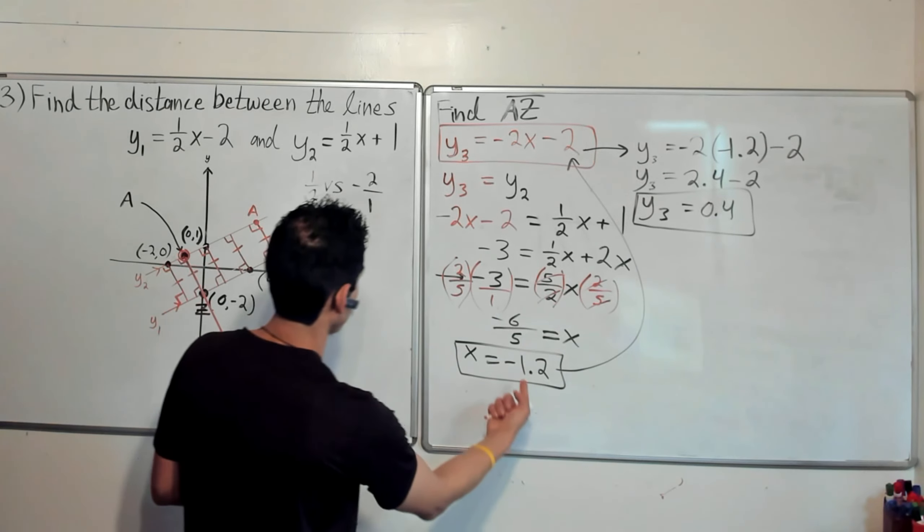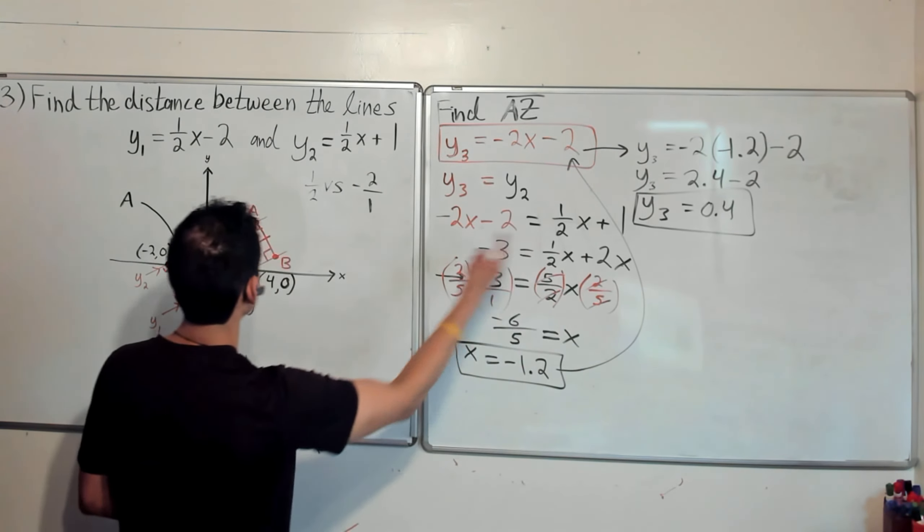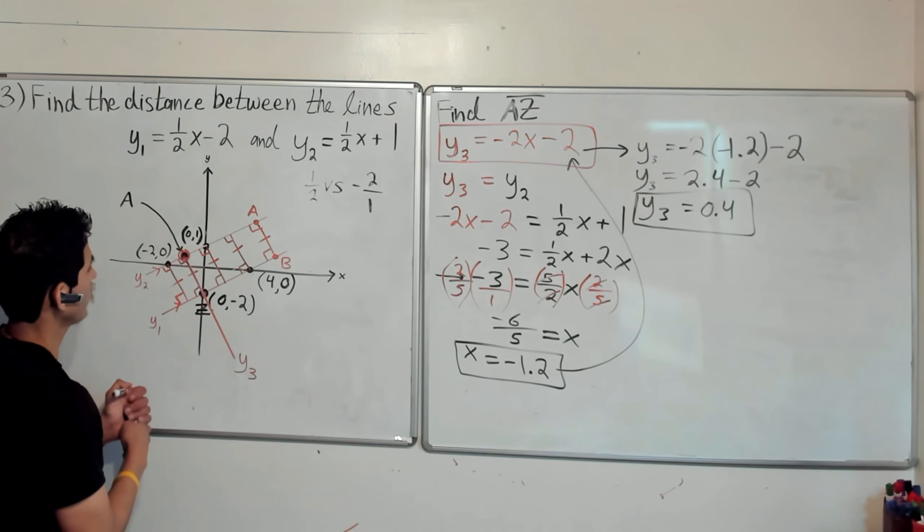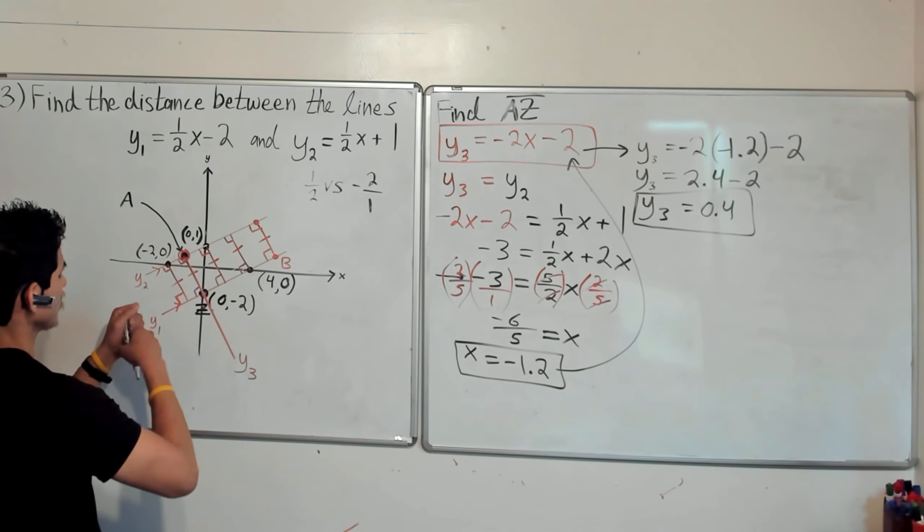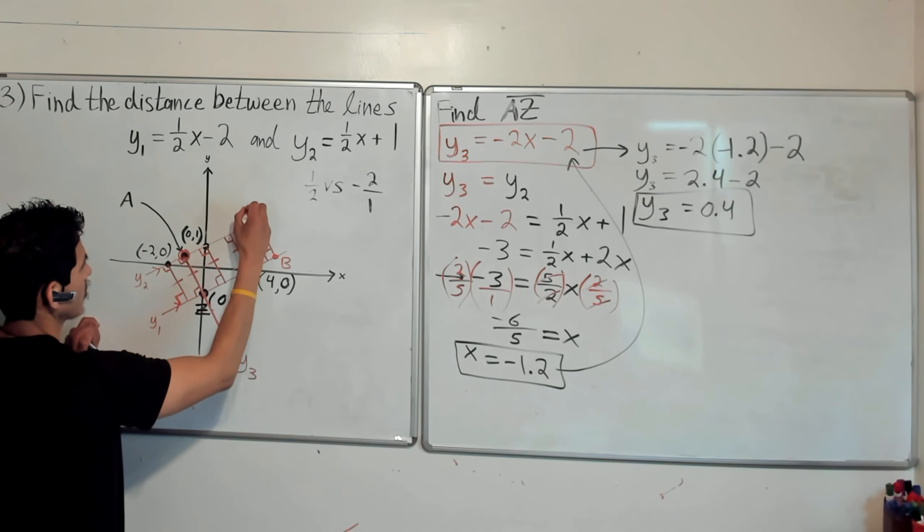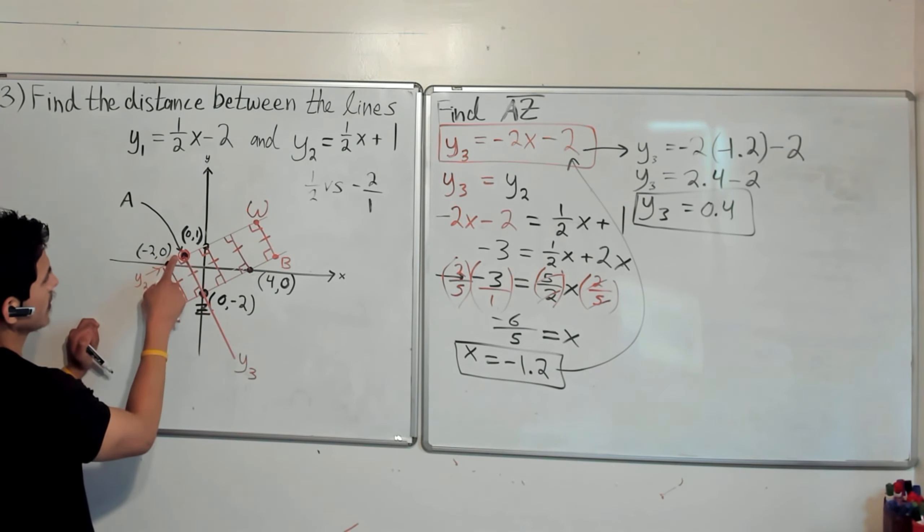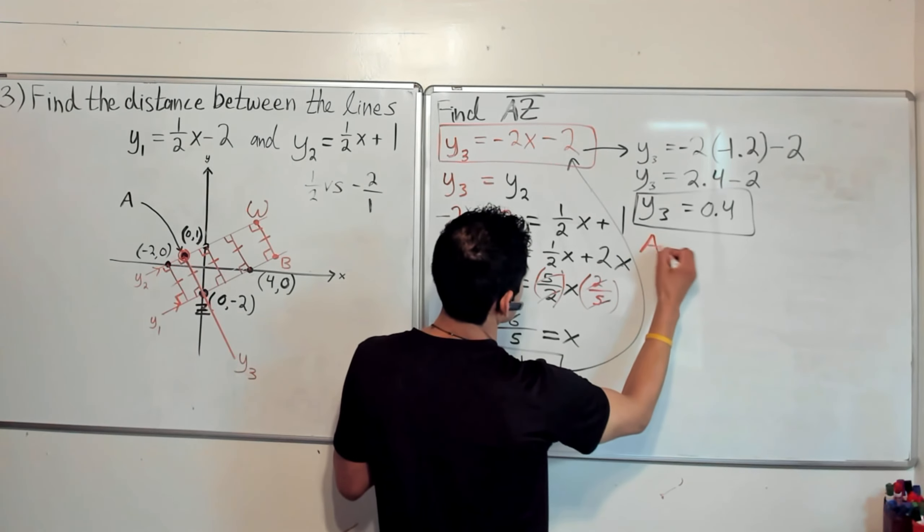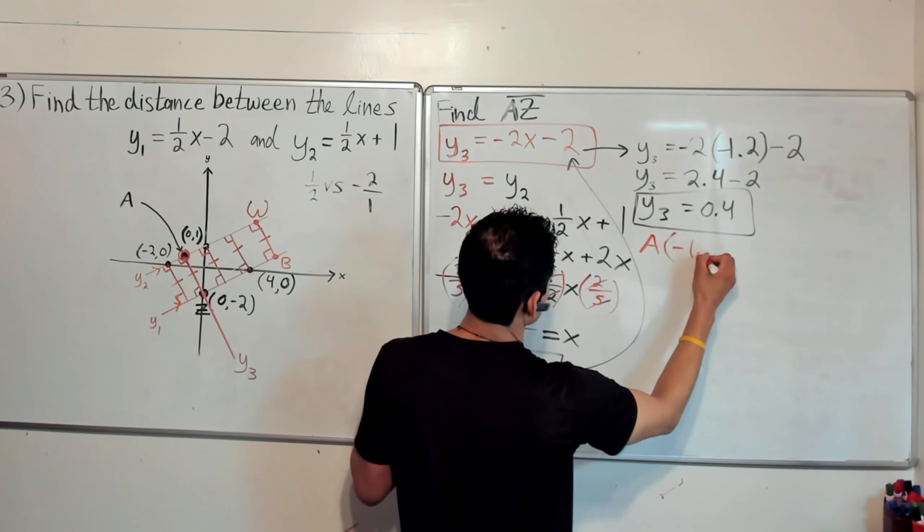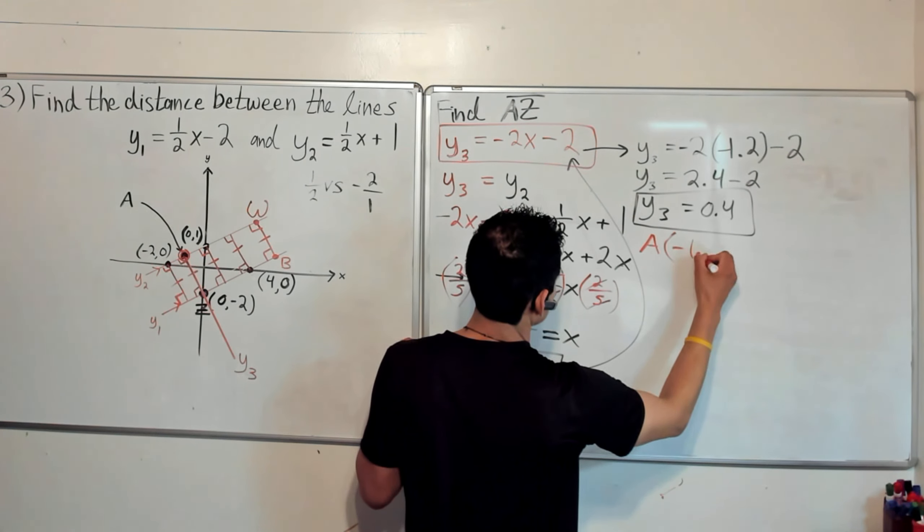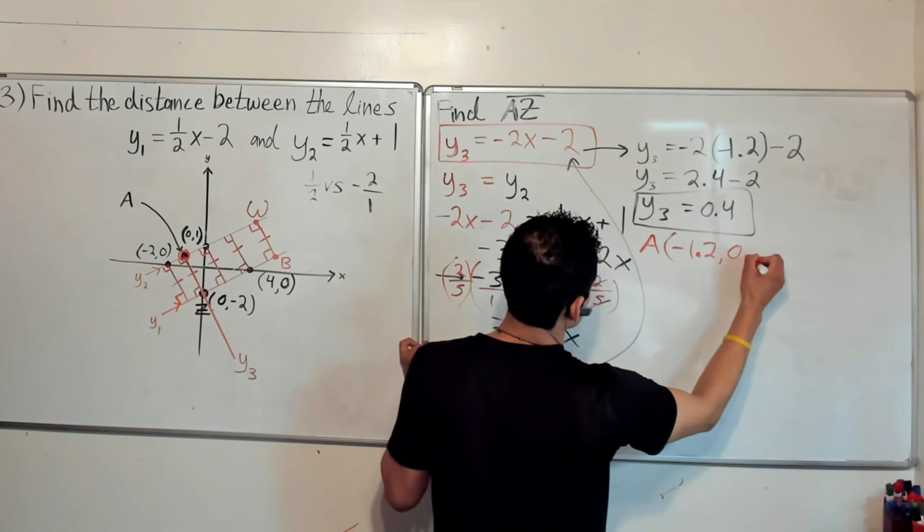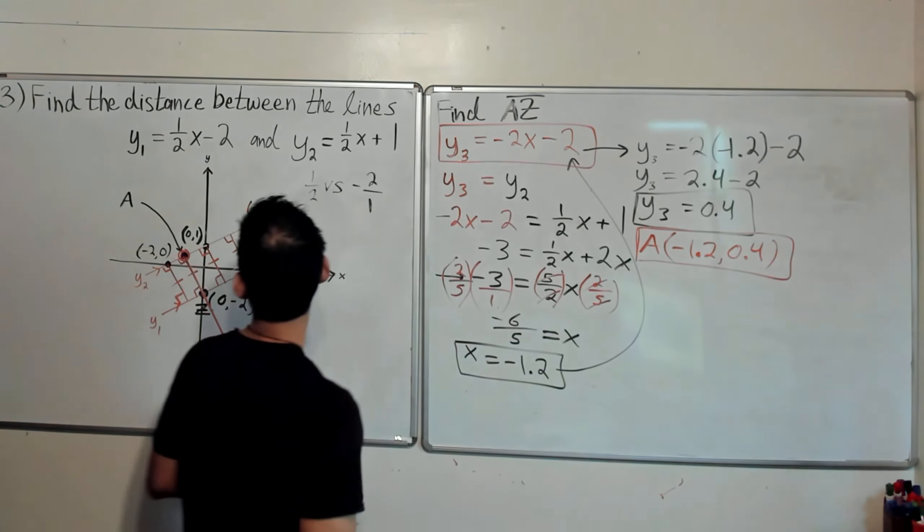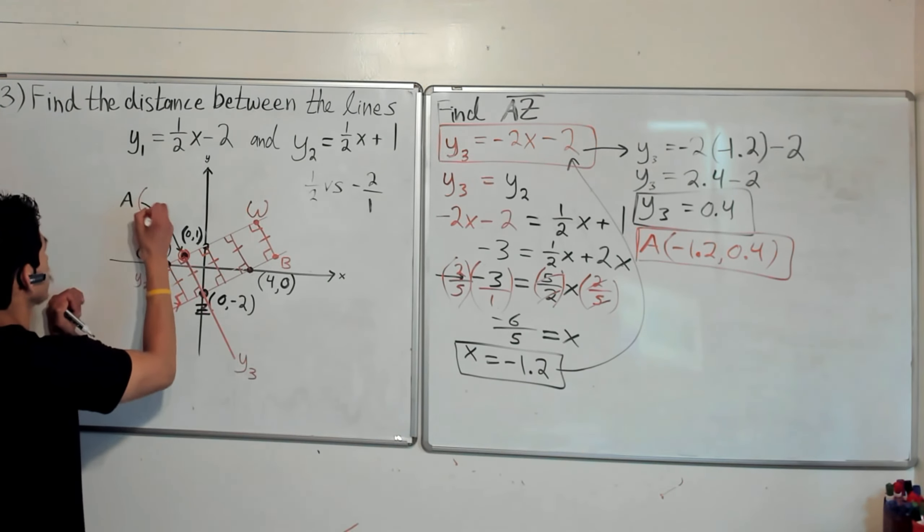Okay, then point A will be at the coordinates (-1.2, 0.4). And I guess we should not call this A. Let's call this one W. This is A. So then point A is at (-1.2, 0.4). Let's write the coordinates over here.